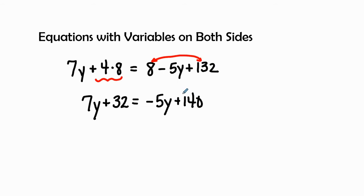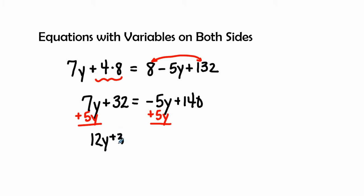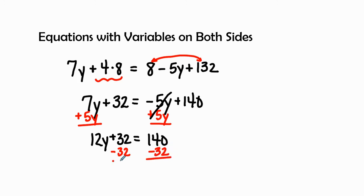Next step: let's get the y terms together by adding 5y to both sides. That gives us 12y plus 32 equals 140, because negative 5y and positive 5y cancel each other out. Now we subtract 32 from both sides because the 32 doesn't belong on the left hand side. This gives us 12y equals 108.